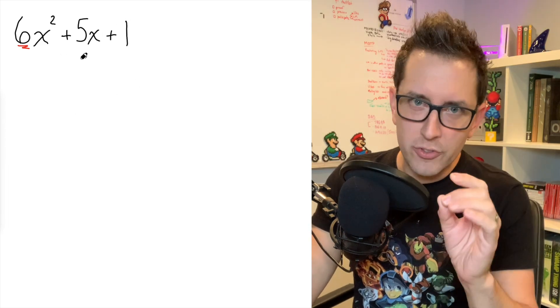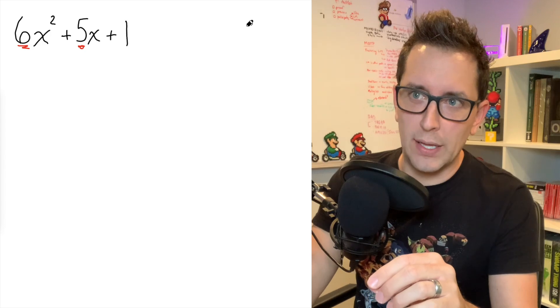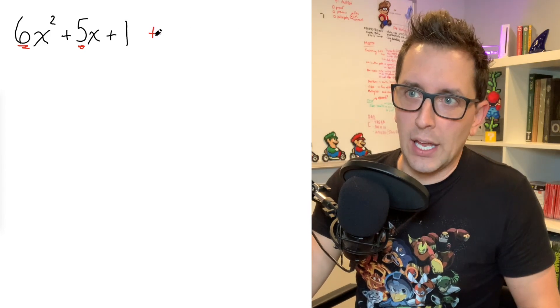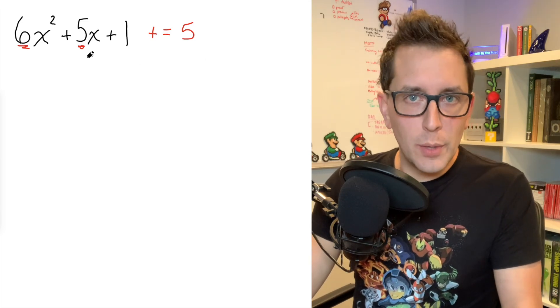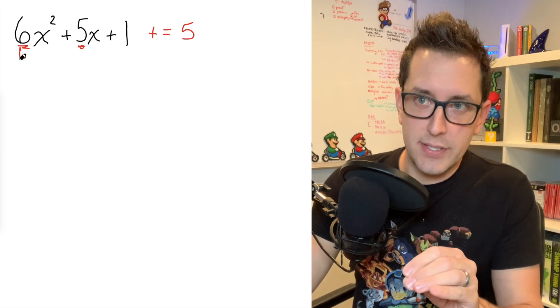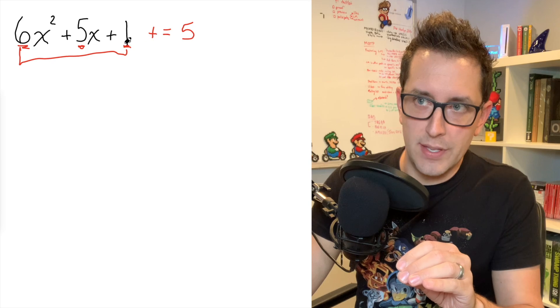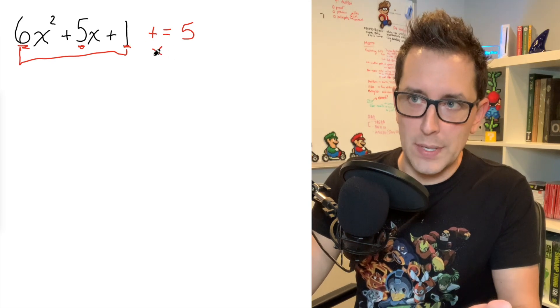Now, before we get into it though, most trinomial factoring strategies start by looking at the B value and finding two numbers that add to get that B value. In this case, that's 5. But we also need two numbers that are going to multiply to get us this A value times this C value at the end here. So that's going to be 6.